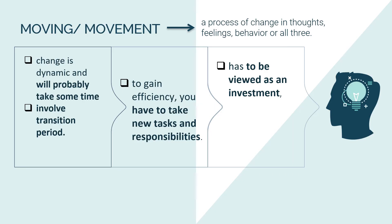The second stage is the movement stage, which involves a process of change in thoughts, feelings, behavior, or all three, in a way that is more liberating or more productive. Once a person has opened up his or her mind, change can start. The change process can be dynamic, and if it is to be effective, it will probably take some time and involve a transition period. In order to gain efficiency, the person will have to take on new tasks and responsibilities. A change process has to be viewed as an investment in both time and the allocation of resources.